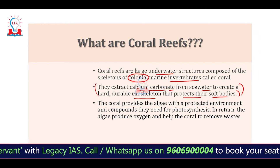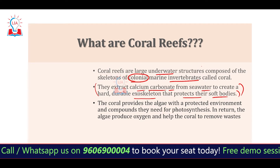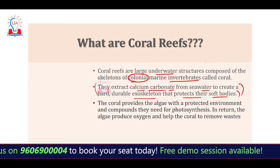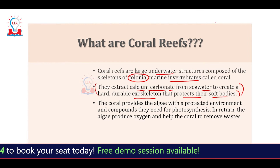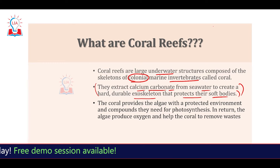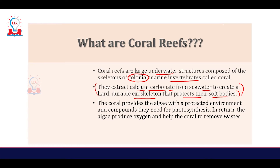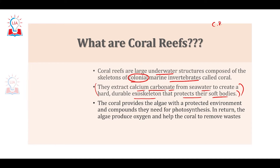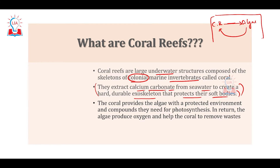This coral is said to be in a symbiotic relationship with algae. Symbiosis is like a give-and-take policy. When coral reefs have a symbiotic relationship with algae, coral reefs give something to the algae and in return algae gives something to the coral reefs — this mutual exchange is called a symbiotic relationship.